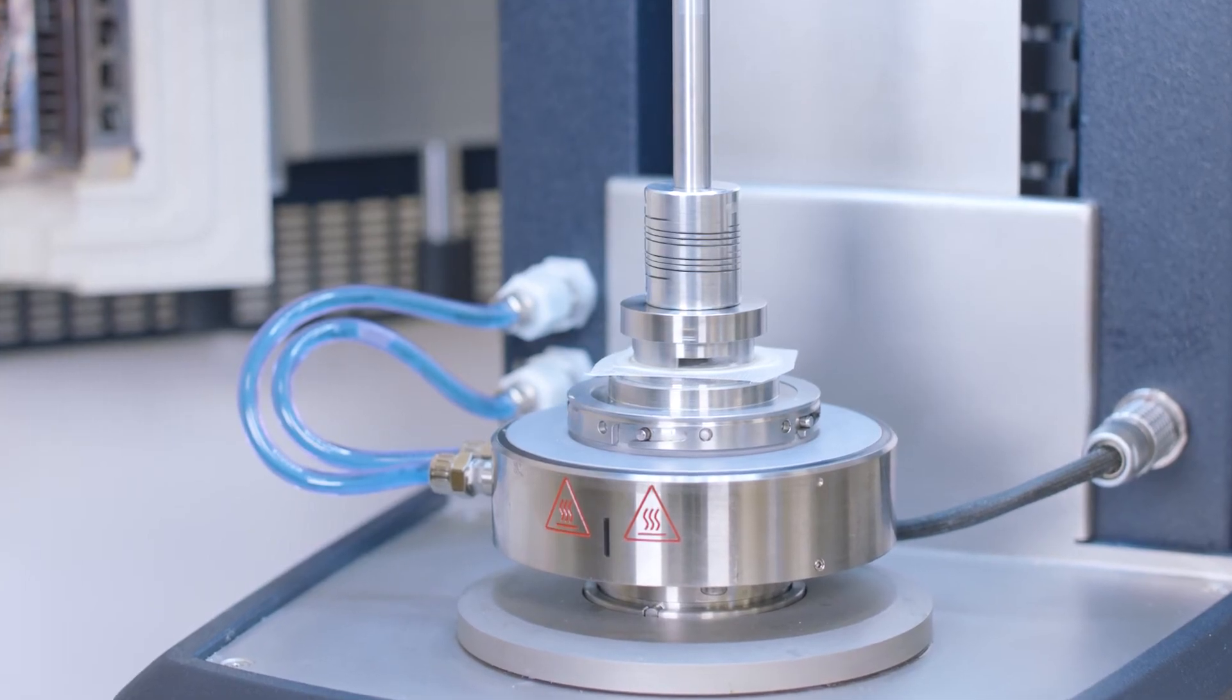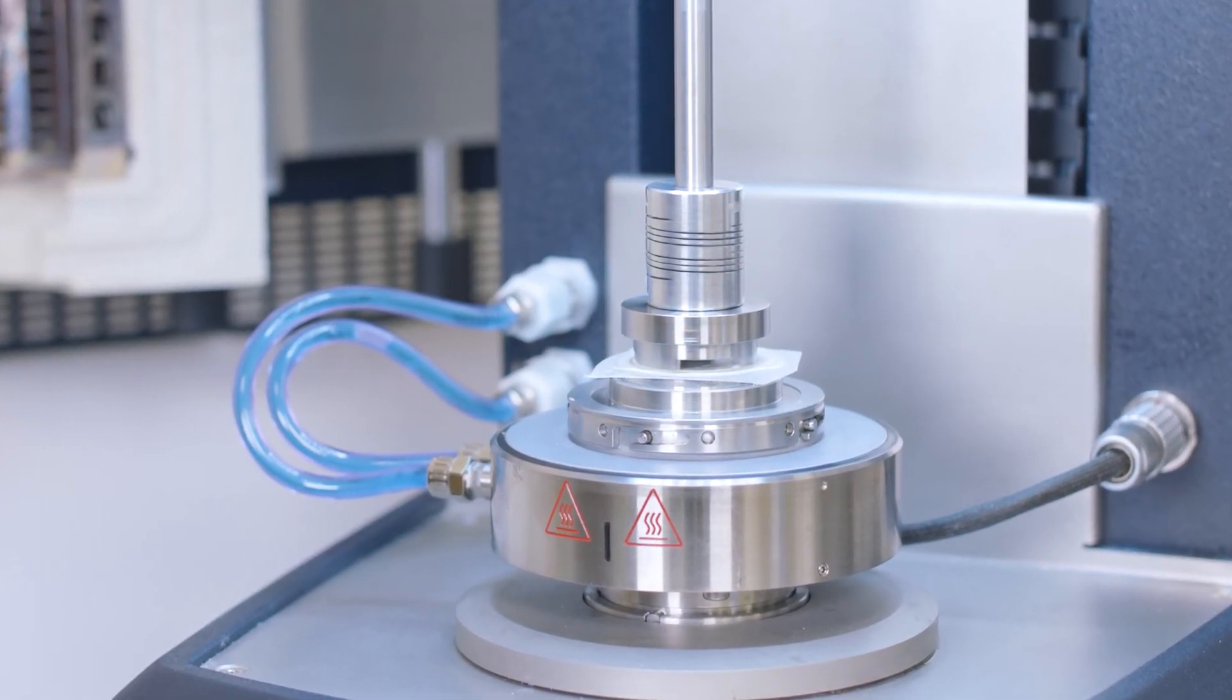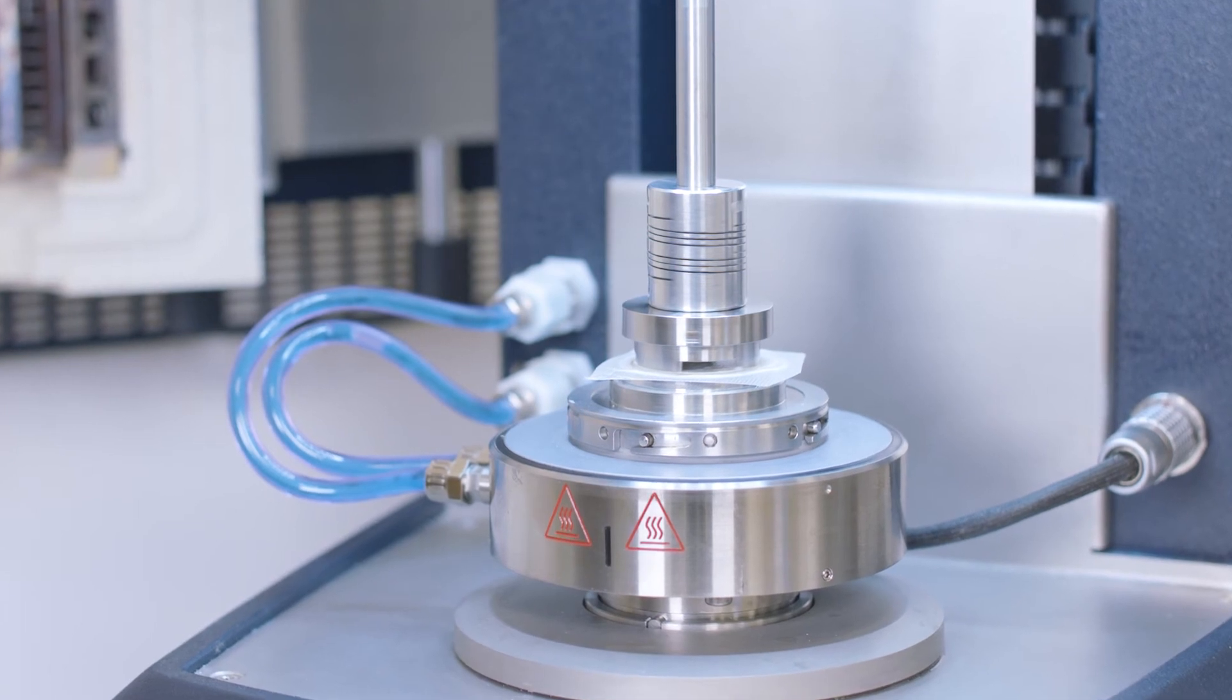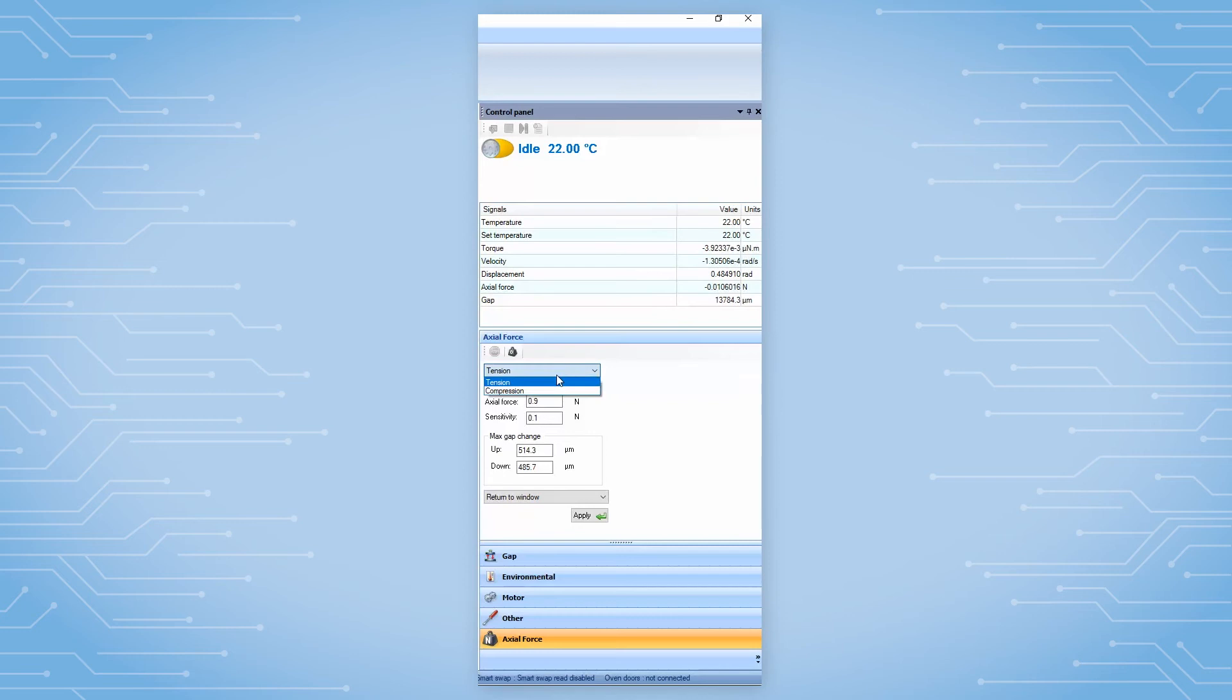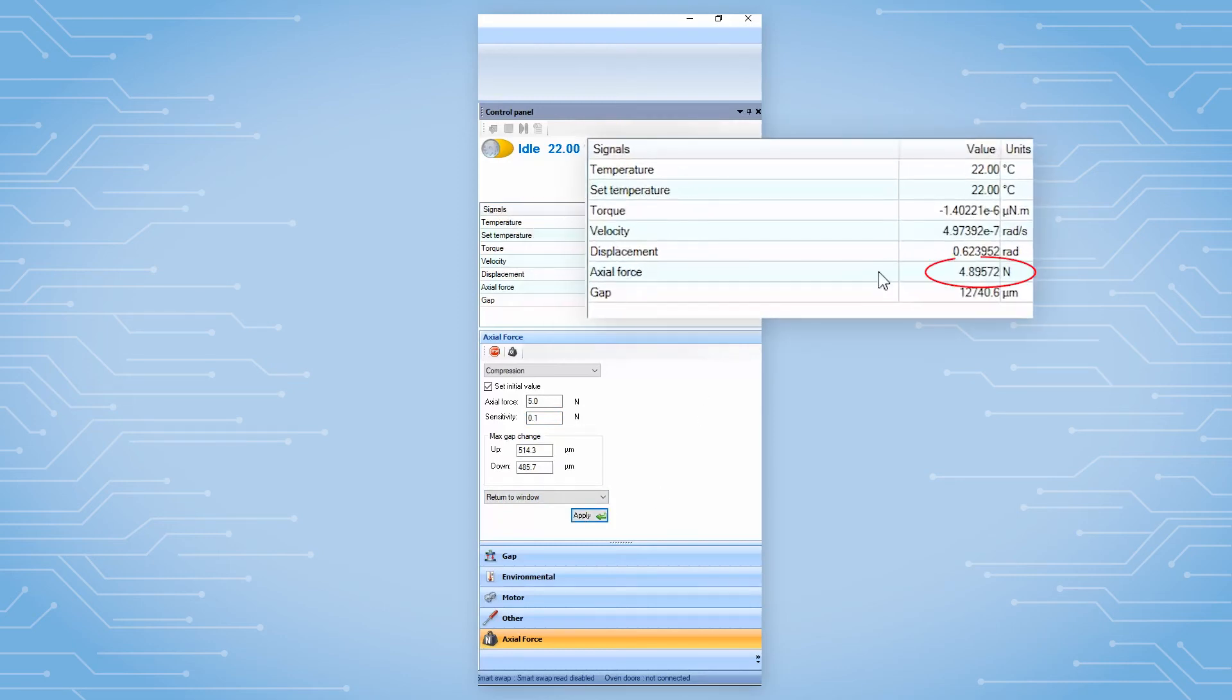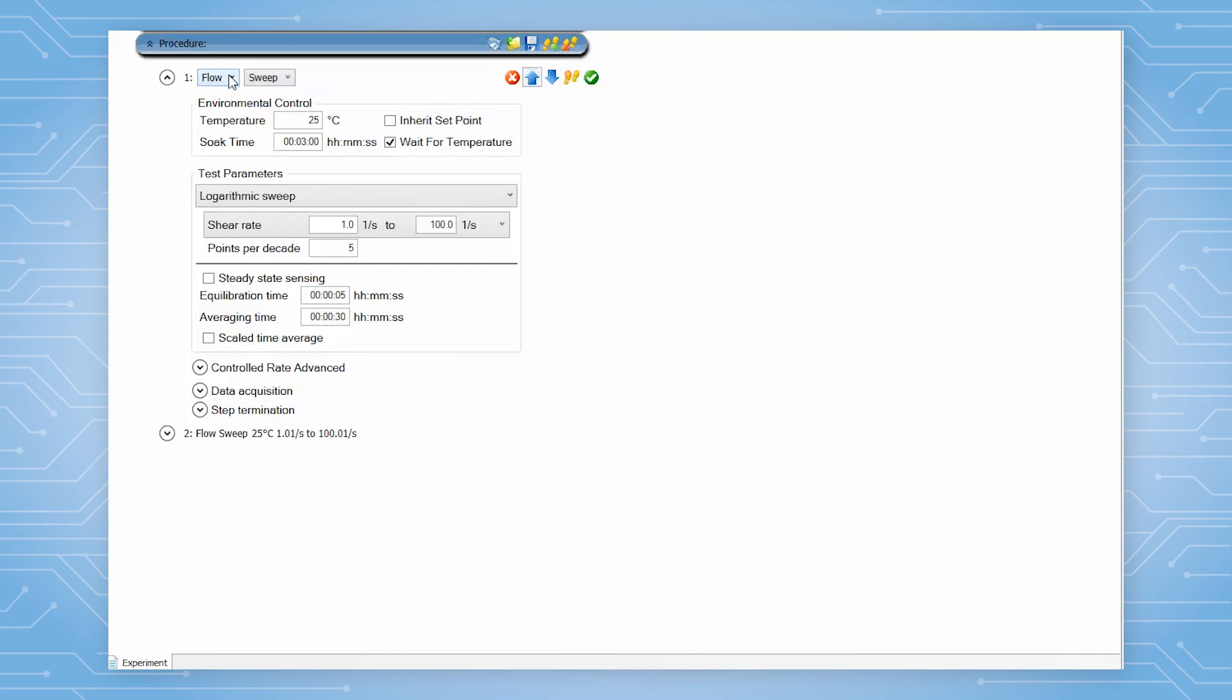After that, load your testing media. Lower the upper geometry until it is in contact with the bottom plate. Apply a constant axial force either from the TRIO's control panel or from the test procedure under the conditioning step.